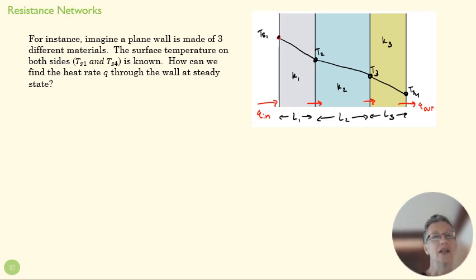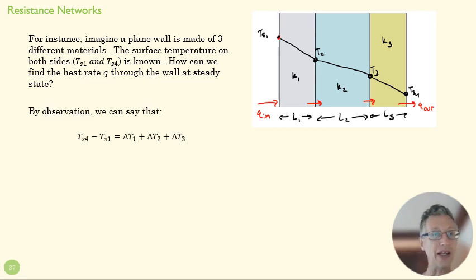Alright, so let's put this into practice. Imagine a plane wall is made of three different materials. We can't just use a rate equation here because our k (thermal conductivity) is going to be different in each of these situations, and we want to know what our heat rate is through those walls.